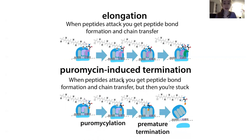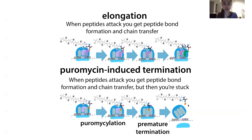With puromycin, instead of a new tRNA coming in that has the anticodon matching the codon in the A site, if you add puromycin, it's going to attack the growing chain and get the chain transferred to it. But it can't elongate further — it's like a dead end — and this gets released. So you have this puromycin-labeled polypeptide. The consequence is premature termination, because instead of the codon coding for an amino acid, you now have puromycin there and nothing else can be added.